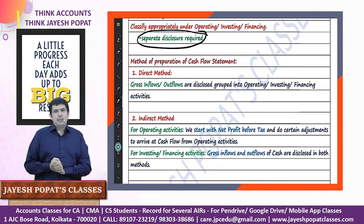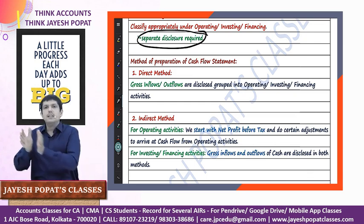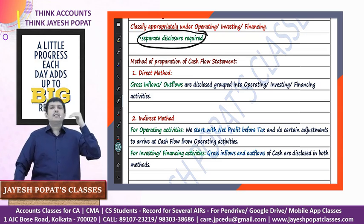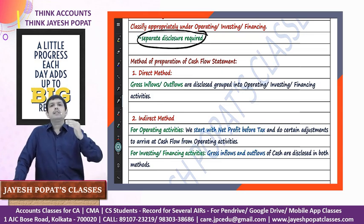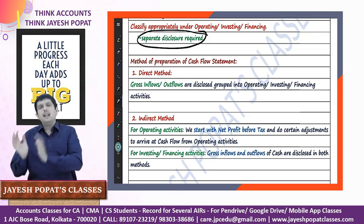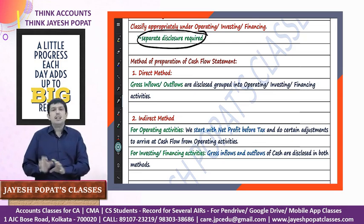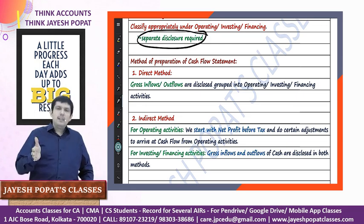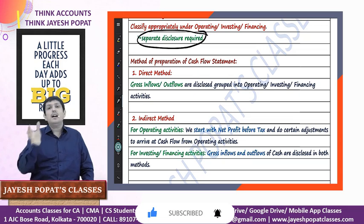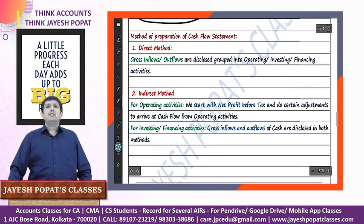There are two formats for preparing the cash flow statement: the direct method and the indirect method. Under the direct method, we show gross inflows and gross outflows of cash under each of operating, investing, and financing activities. Under the indirect method, the operating activity starts with net profit before tax and then adjustments are made for non-cash items, non-operating items, taxes, etc. to arrive at cash from operations; the investing and financing activities remain the same under both methods. For listed companies on a recognized stock exchange, SEBI mandates the indirect method. All other enterprises have a choice between the two methods.